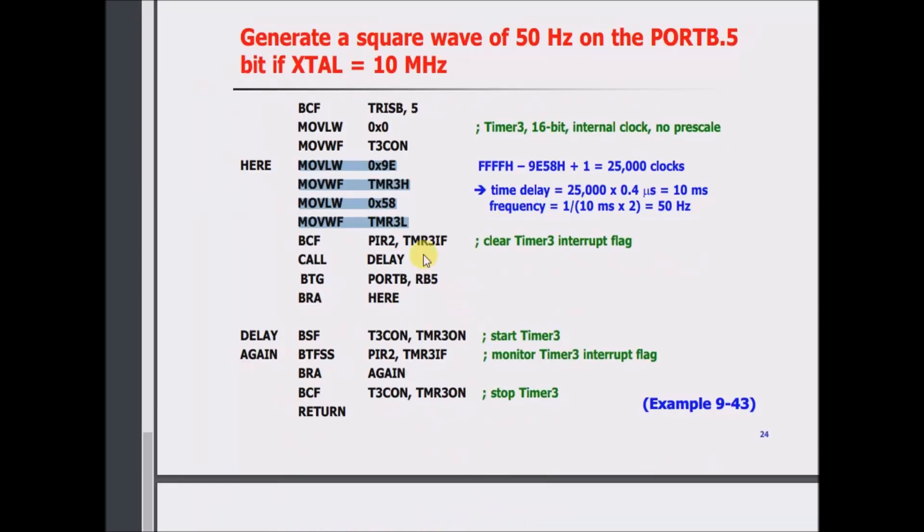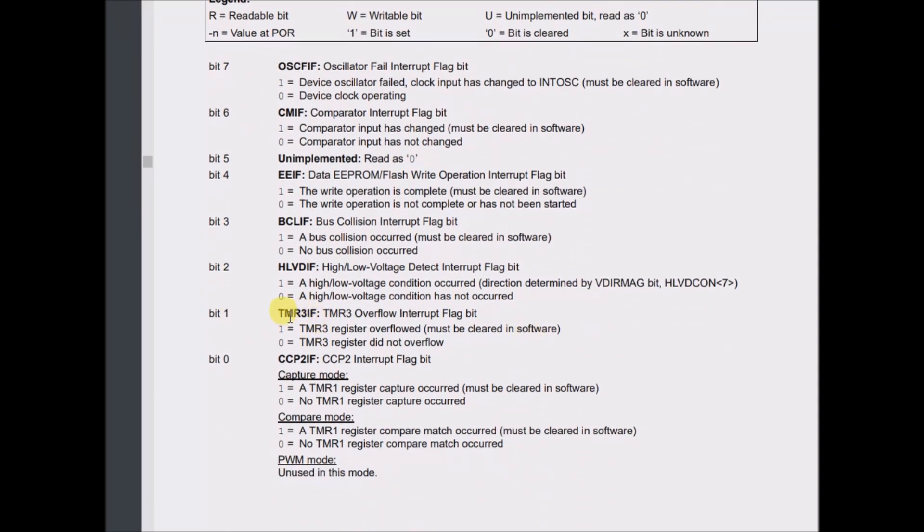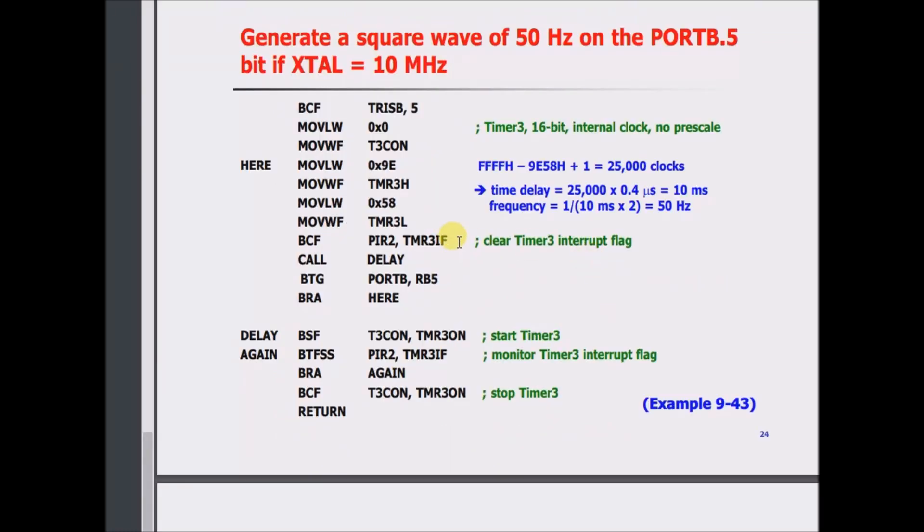And he's clearing this bit in particular, TMR3IF. This TMR3IF is bit 1, TMR3 overflow interrupt flag bit. I guess to clear it is to set it to 0. Does that have to be software cleared? I didn't see that in the data sheet, but maybe it just is.